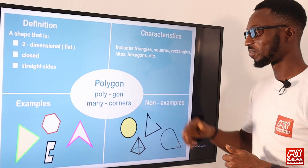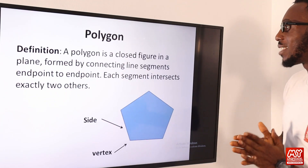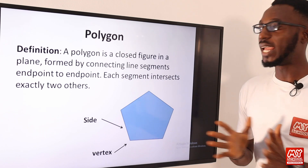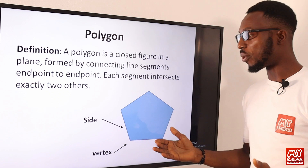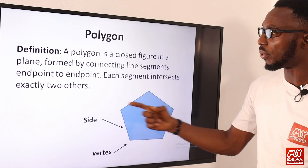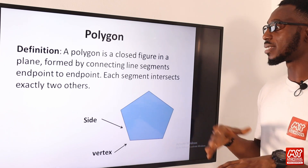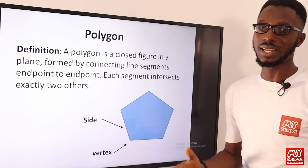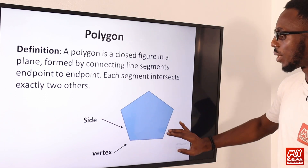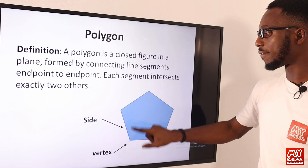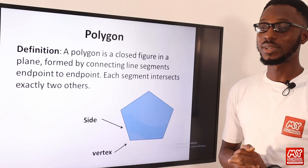A polygon is a closed figure in a plane that is formed by connecting line segments endpoints to endpoints. These segments intersect exactly two others. These are sides — you can call them edges — and then these are vertices.